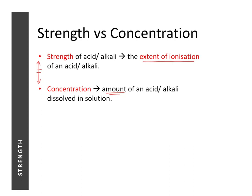Concentration can be controlled — we can change the concentration of an acid or alkali. But the strength of an acid cannot be changed without changing the structure of the acid; it is already fixed. So we can have a high concentration of a weak acid and it is still a weak acid, or a very low concentration of a strong acid and it is still a strong acid.